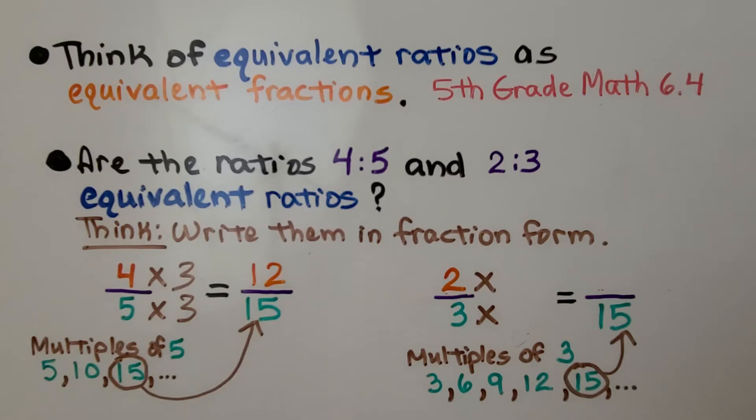We do the same thing for 2 thirds. 3 times some number is 15. That's going to be a 5. So we have to multiply the 2 times 5. That's going to give us a 10 for our new first term.